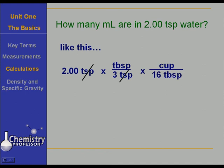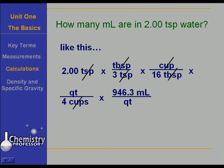Times a cup per 16 tablespoons. Did you know there are 16 tablespoons in a cup? That is a really handy thing to know. And of course I would expect you to know the English system. So tablespoons cancel and now I'm at cups. Times quart per four cups. You knew there were four cups in a quart, didn't you? And so cups cancel. Times 946.3 milliliters per quart. And now quarts cancel and I am left with milliliters.